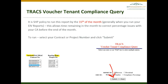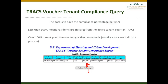When you select the Voucher Tenant Compliance Query, you will see the Section 8 Contract Number option on the left-hand side, so you will scroll through and find your Contract Number. If you only have access to one property, you will only see one Contract Number listed. When you have clicked on the appropriate Contract Number or the Project Number in the second scroll bar, you can select Submit. You will then have a report such as this screenshot here.